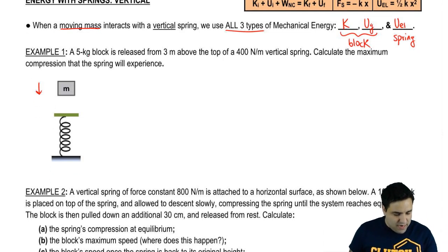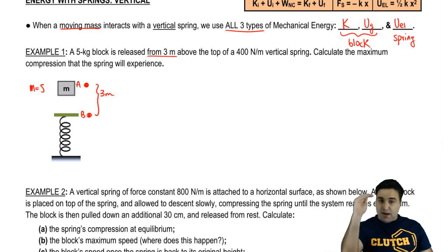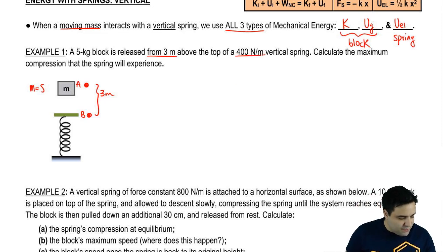So let's check this out here. I have a five kilogram mass, so I'm going to put over here mass equals five. It's released from three meters above the top of the spring. So this gap here is three meters. I'm going to leave some space because I want to call this point A, and I'm going to call this point B right here, the beginning and the very top of the spring. The spring is a 400 newton meter spring. This is the coefficient of the spring, spring force coefficient.